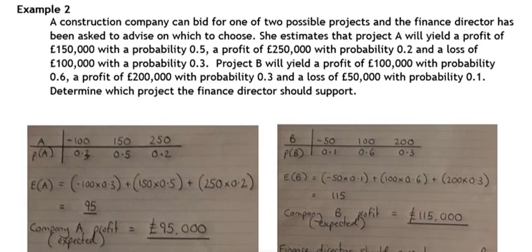Example 2 gives us a question in context. Here we've got a question in context about two projects. We want to know which one gives us the best expected profit. So we pick out the relevant information for each project and structure it into our probability distribution.